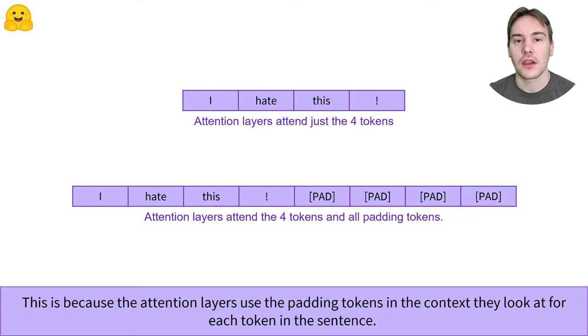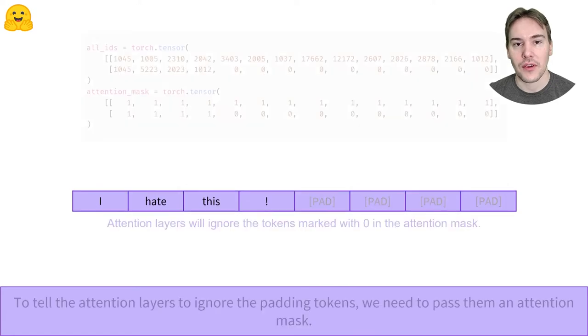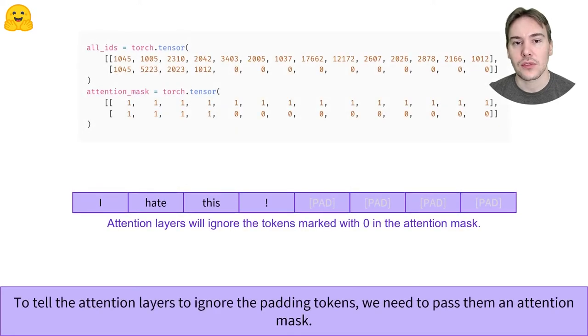To get the same results with or without padding, we need to indicate to the attention layers that they should ignore those padding tokens. This is done by creating an attention mask, a tensor with the same shape as the input IDs with zeros and ones. Ones indicate the tokens the attention layers should consider in the context, and zeros the tokens they should ignore.